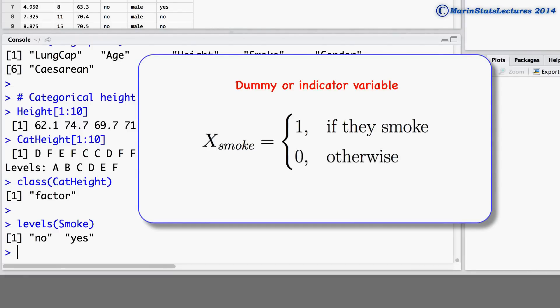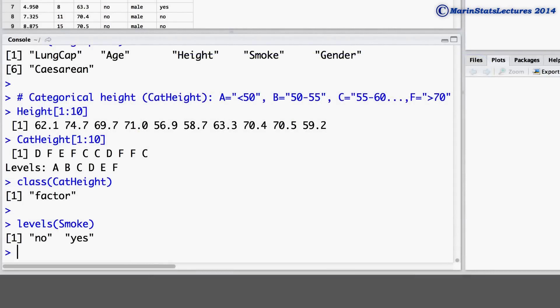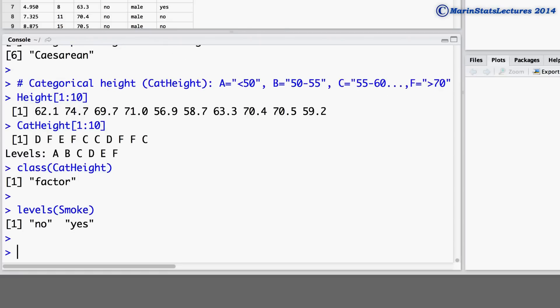Then for a non-smoker, the xSmoke indicator will equal 0. It's worth noting that conversely, we could instead create an indicator for non-smoking instead of an indicator for smoking.